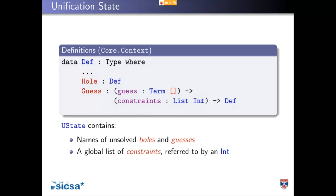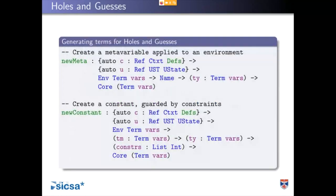It's a global list of constraints we can refer to by an integer reference — I should probably use something more illustrative than int, but underneath it's a map of ints. We have a couple of helpers in the elaborator: in the current environment, given some name for a hole — if you type query hole — it will create a new meta variable of a particular type and give you back a term which is basically that name applied to the environment.